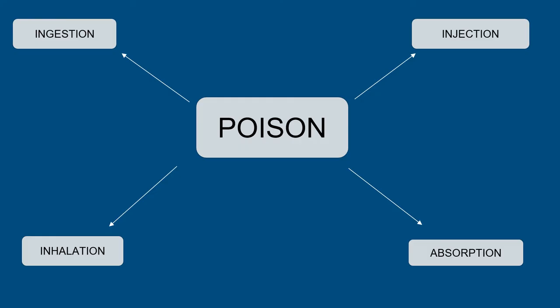An injected poison can cause an immediate reaction at the injection site followed by a delayed systemic reaction, and these bites can cause an allergic reaction leading to anaphylactic shock. The last route is absorption: a poisonous substance contacts the skin or mucous membranes and can be a dry powder or liquid — like baby powder or poison ivy.